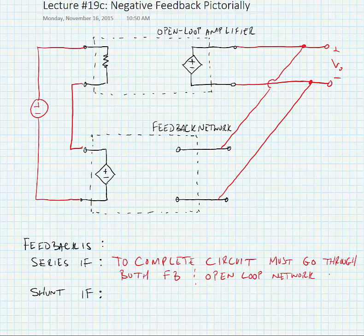Here we can see at the input that in order to complete this circuit, we would have to go through the open loop amplifier and then through the feedback network to complete the circuit. And so we have a series connection at the input.